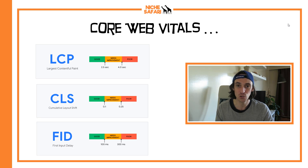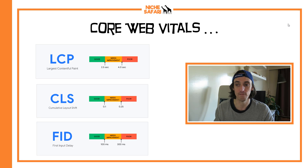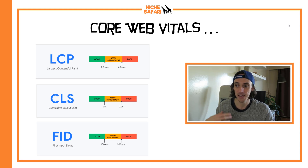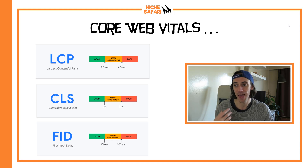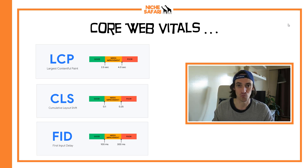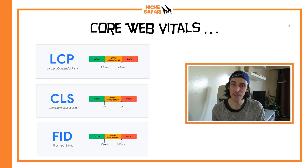The Google benchmark for Largest Contentful Paint is two and a half seconds. If it loads in under two and a half seconds, you pass with a good score in the green. If it's faster than four seconds, it needs improvement and is amber. Anything slower than that is red, meaning it is poor.